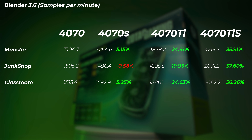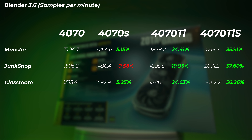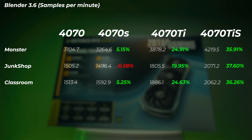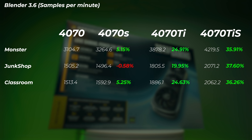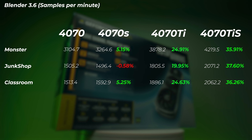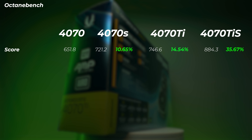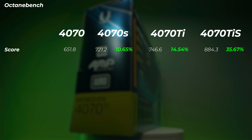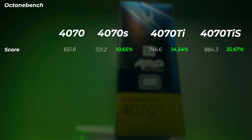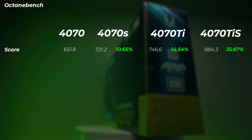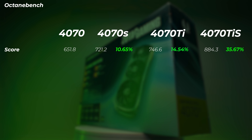The Ti Super is over 20% faster than the Super, or 38–45% faster than the 4070 — a huge leap. In Blender, the Super is about 5.3% faster than the non-Super. The Ti is about 19–25% faster than the 4070, so there's roughly a 20% gap between Super and Ti. The Ti Super is about 35–38% faster in Monster, Junk Shop, and Classroom scenes. Between Ti and Ti Super there's roughly a 10–15% increase, though this benchmark doesn't fully saturate VRAM.